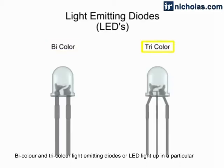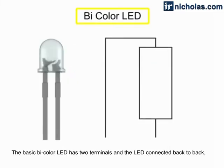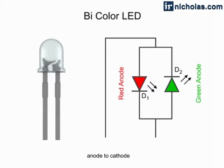Bicolor and tricolor light-emitting diodes, or LEDs, light up in a particular color depending on current flow direction. The basic bicolor LED has two terminals, and the LEDs are connected back to back, anode to cathode.